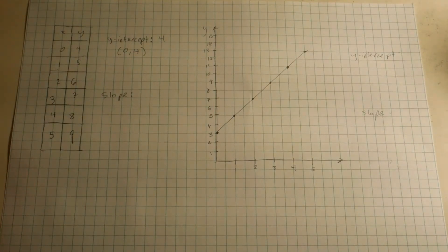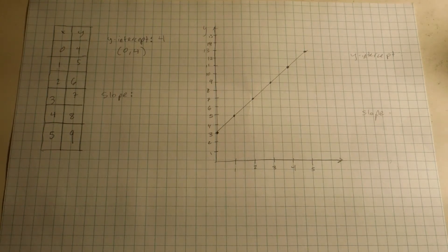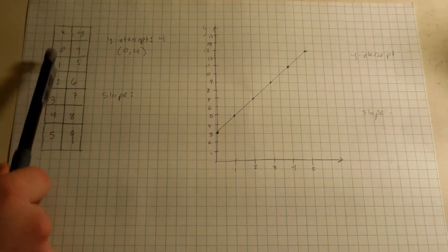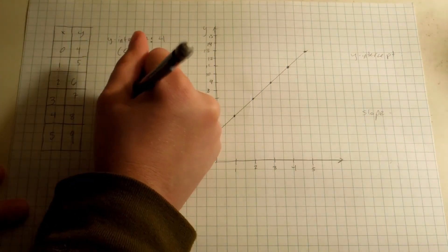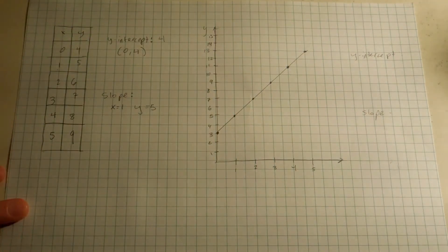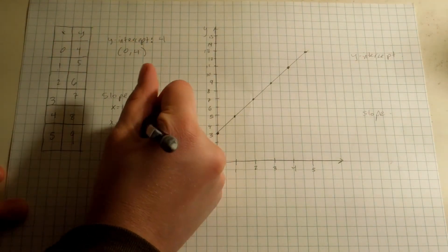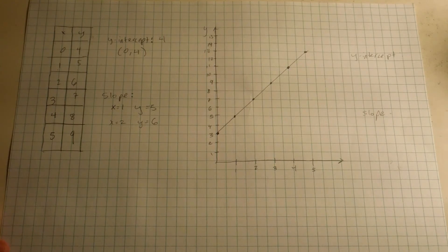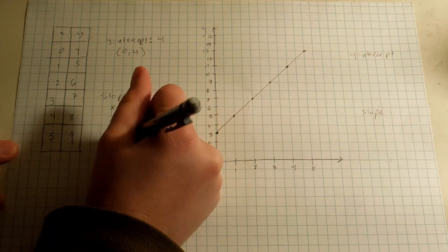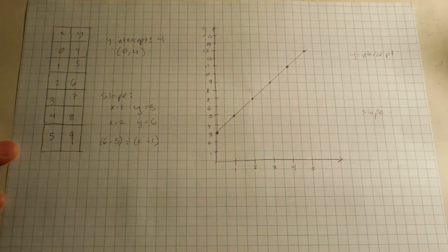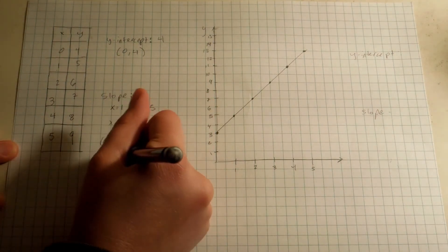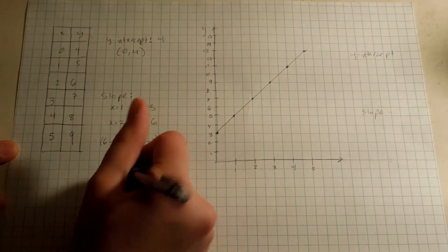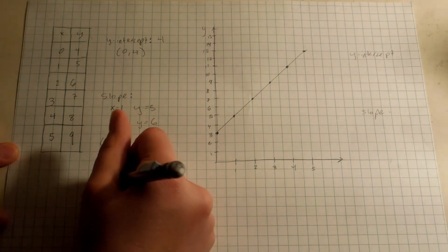The slope is a little trickier. Remember, slope is the change in y divided by the change in x. We need two x and y numbers for this. So we'll pick x equals 1 and y equals 5, and then x equals 2 and y equals 6. We always start with the bigger x value and subtract from the smaller x value. So we're going to have 6 minus 5 divided by 2 minus 1. 6 minus 5 is 1, divided by 2 minus 1 is 1. The answer is 1. So our slope is 1.